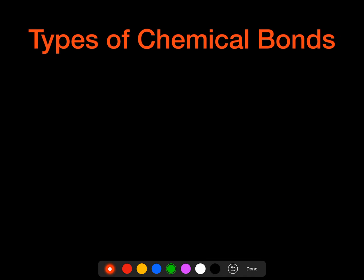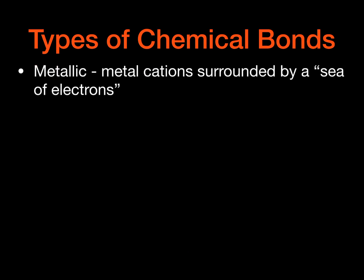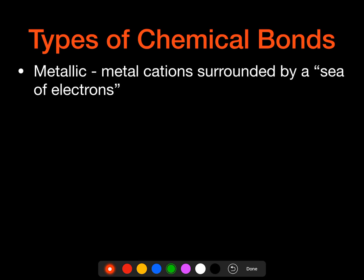So let's take a look just at types of chemical bonds. We're going to talk about metallic first. We're going to come back and do a little more with metallic later just to make sure we have a broad understanding of this. But metallic bonds are going to be those where we have metal cations that are surrounded by what we call a sea of electrons.